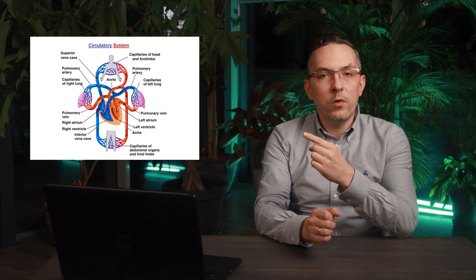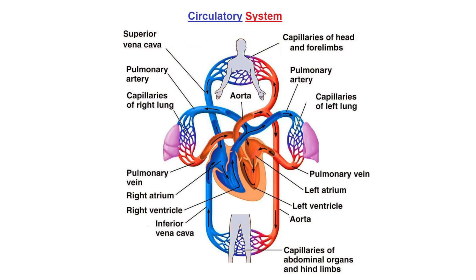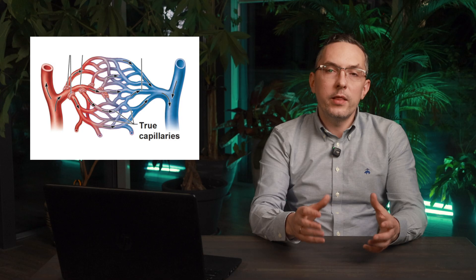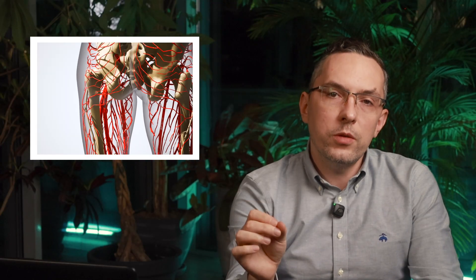Take a look at the diagram of our circulatory system. The blood travels through large arteries and veins to reach our organs, and then it branches into a network of tiny capillaries. And this is the crucial part.